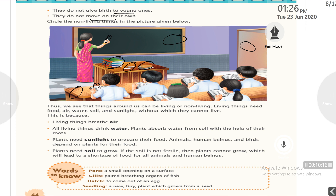The things around us can be living or non-living. Living things need food, air, water, soil and sunlight without which they cannot live. All living things breathe air and drink water. Plants absorb water from the soil through their roots and also need sunlight. Animals, human beings and birds depend on plants for their food. Plants need fertile soil to grow — if the soil is not fertile, plants cannot grow, which can lead to a shortage of food for all animals and human beings.